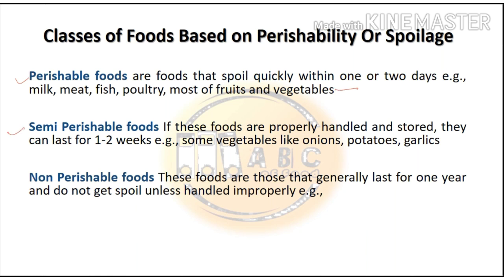The second is semi-perishable foods. If these foods are properly handled and stored, they can last for one to two weeks. For example, vegetables like onions, potatoes, and garlic fall under this category.